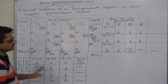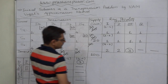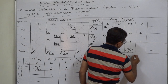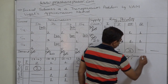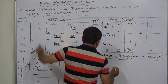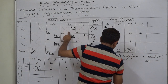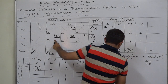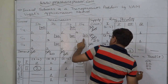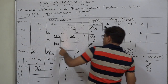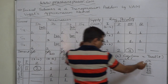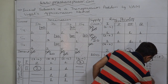Let us calculate the total transportation cost. Units multiplied by cost per unit: 20 units at cost 1 = 20; 10 units at cost 1 = 10; 20 units at cost 3 = 60; 20 units at cost 2 = 40. Adding up: 30 plus 60 is 90, plus 40 is 130, plus remaining allocations gives a total of 180 rupees.